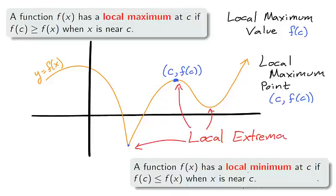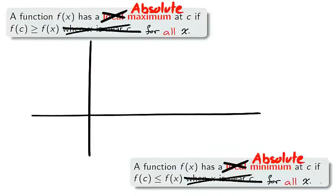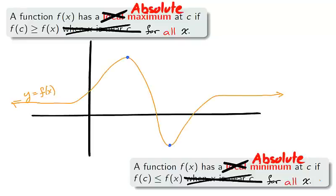Points which are locally a maximum or minimum are referred to as local extrema. Similar to the local extrema, the absolute extrema are the absolute maximum and minimum points on f.